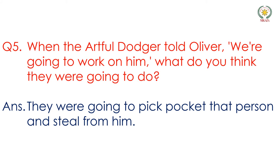Question number 5: When the Artful Dodger told Oliver 'we are going to work on him,' what do you think they were going to do? The answer is they were going to pickpocket that person and steal from him. The Artful Dodger, Oliver, and Charlie were going to pickpocket people — pickpocket means to steal from someone's pocket.